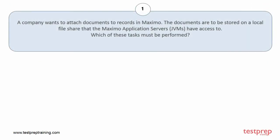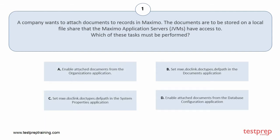Question number 1. A company wants to attach documents to records in Maximo. The documents are to be stored on a local file share that the Maximo application servers have access to. Which of these tasks must be performed? Option A: enable attached documents from the organization's application. Option B: set mx.doclink.doctypes.devpath in the documents application. Option C: set mx.doclink.doctypes.devpath in the system properties application. Option D: enable attached documents from the database configuration application. The correct answer is option C.